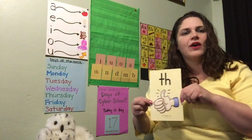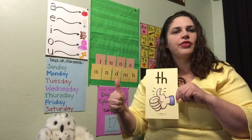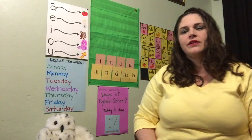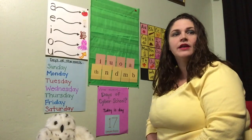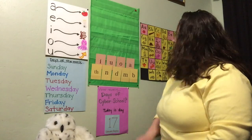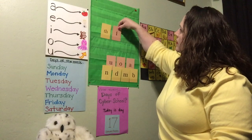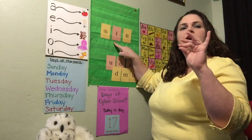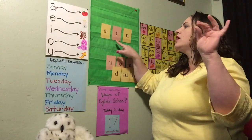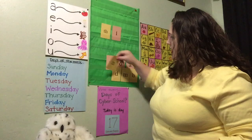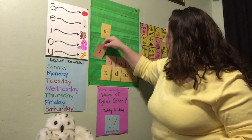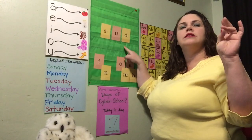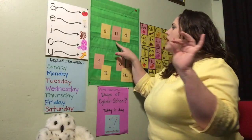Today we're going to focus on the sound that TH makes — TH, thumb, TH. Let's tap out some words that have the TH sound in them. Sometimes we're going to hear the TH sound at the beginning of the word, sometimes at the end. Elbows up, thumb and pointer finger together. Let's tap that out: TH, I, N — THIN. One more time: TH, I, N — THIN. Change that ending sound and that middle sound. Elbows up, thumb and pointer finger together: TH, U, D — THUD. TH, U, D — THUD.